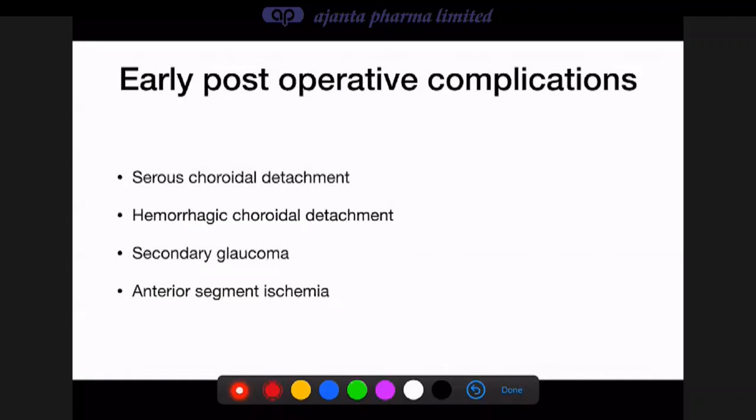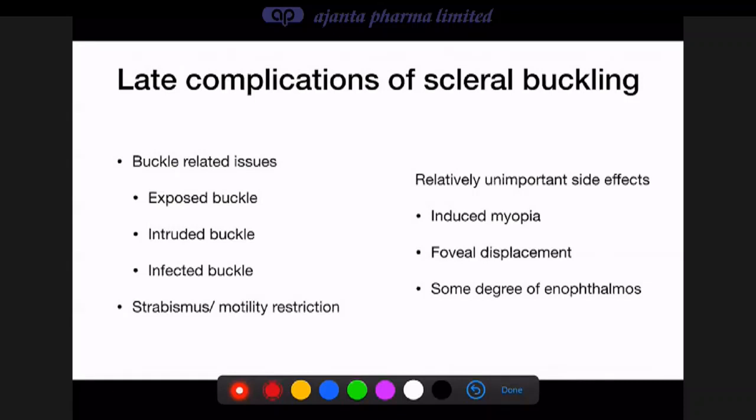Early postoperative complications include serous or hemorrhagic choroidal detachment, secondary glaucoma (even from minimal choroidal detachment pushing the iris-lens diaphragm forward, potentially causing angle-closure glaucoma, not just open-angle type from steroid use), and anterior segment ischemia. Anterior segment ischemia is less problematic when fewer muscles are handled and broad buckles are avoided. Muscle disinsertion, previously associated with anterior segment ischemia, is no longer practiced — such cases are now handled with pars plana vitrectomy.